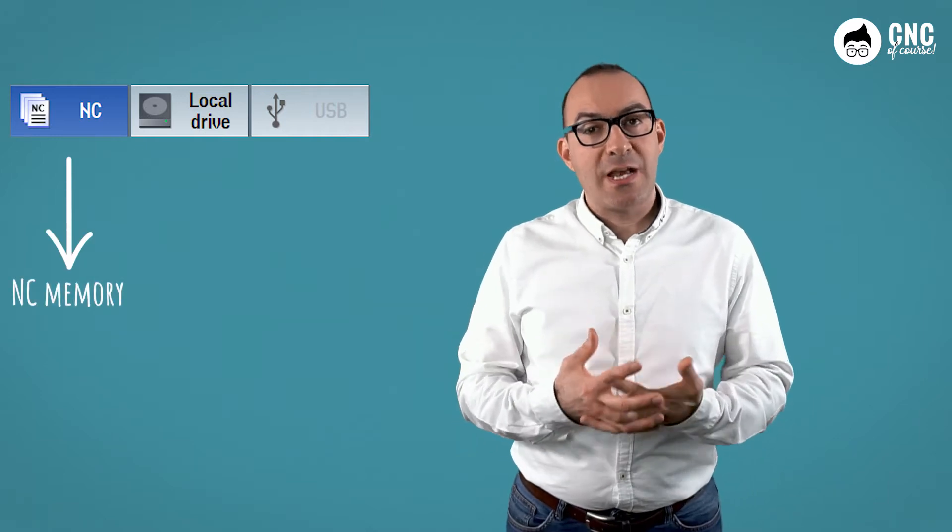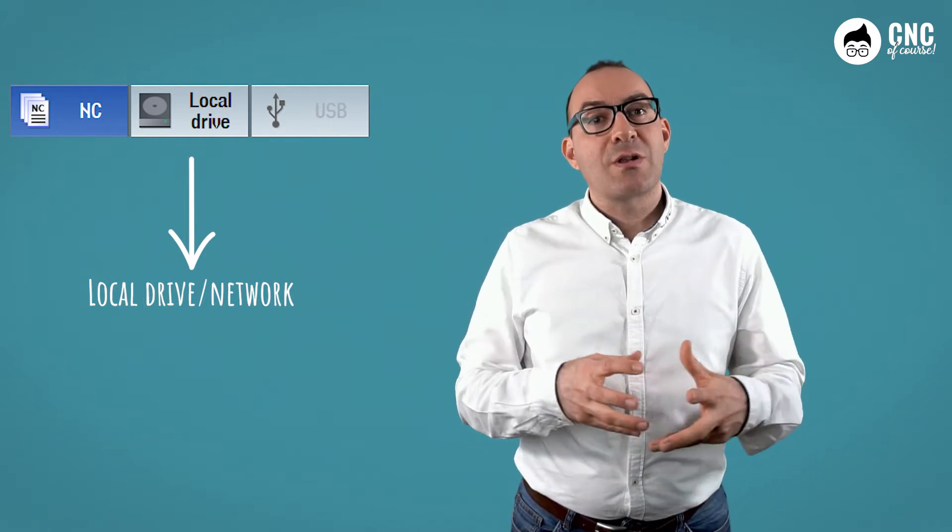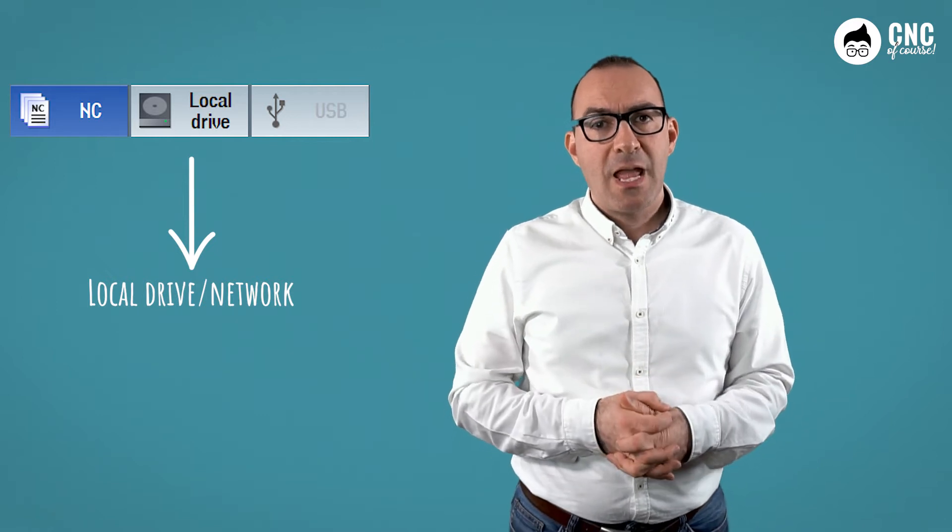With the horizontal soft keys, we select the unit we want to work on. The first of the units, and certainly always present, is the memory of the NC to which you can add a local drive, usually used for storing programs, and which may correspond to a network drive or a memory card. The third icon appears when a USB key is inserted into the machine, and is used to operate on the files on the USB key.